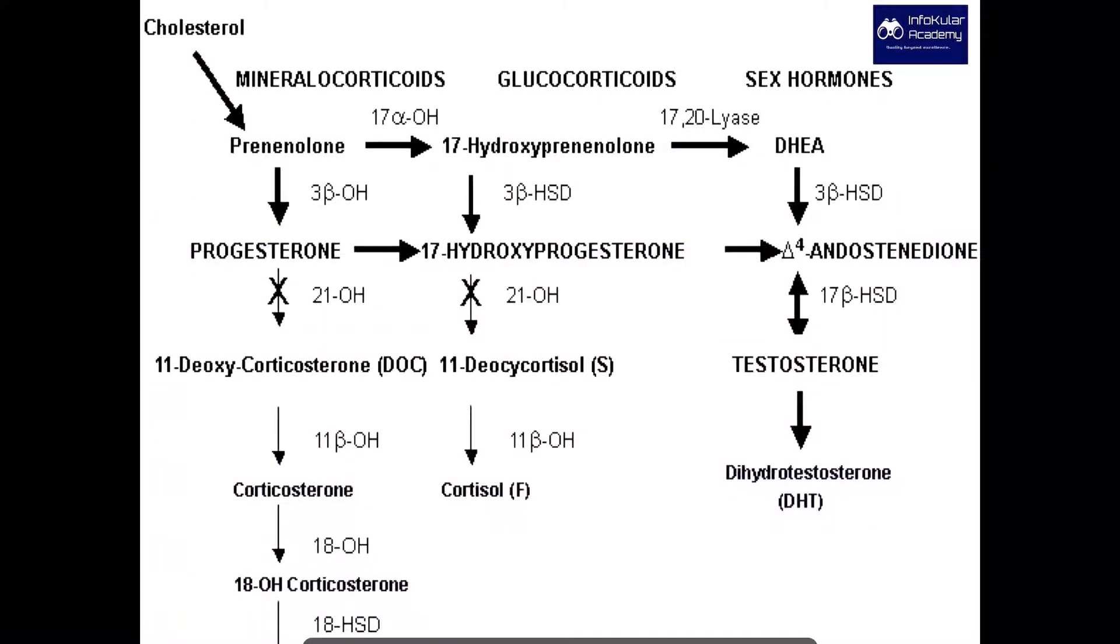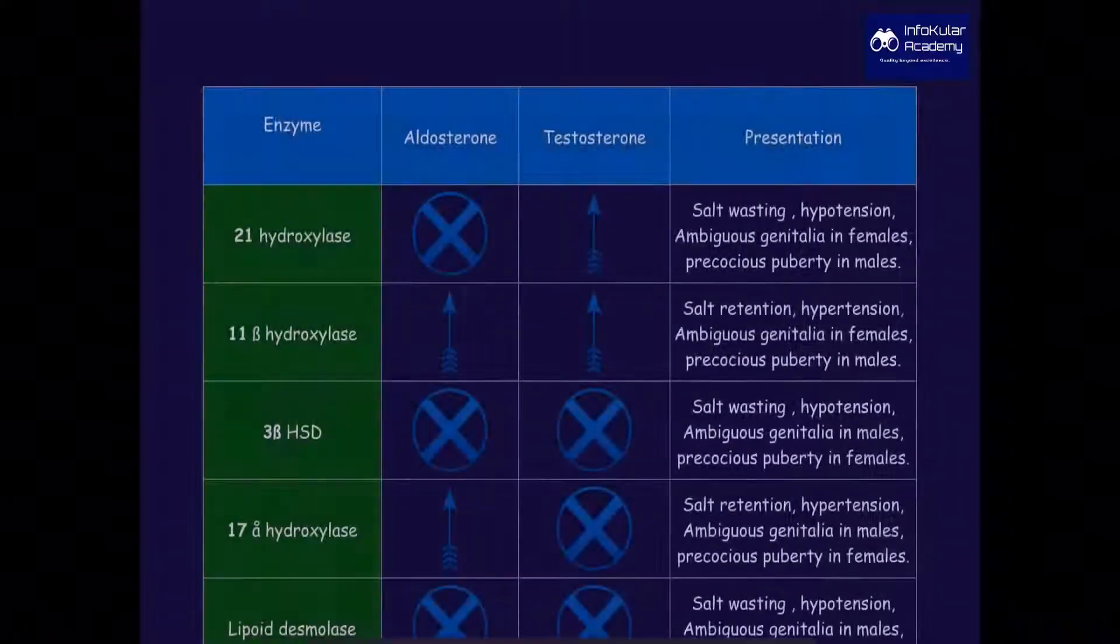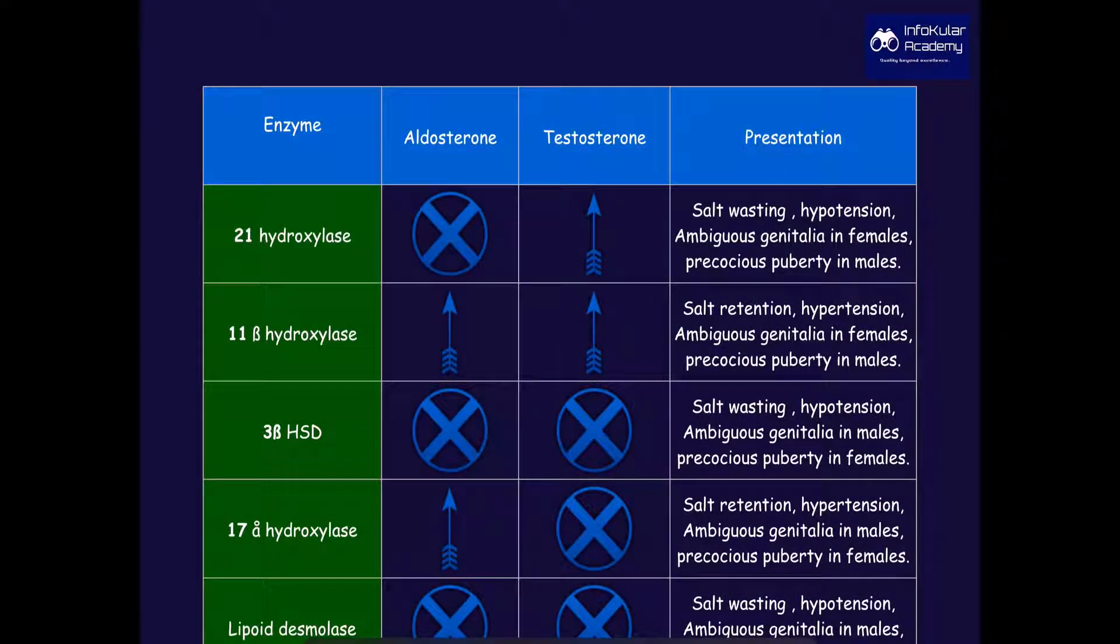This is the general metabolism showing how aldosterone, cortisol, and DHT, which is dihydrotestosterone, is formed through a series of steps and enzymes: 21-hydroxylase, 17-beta HSD, 3-beta HSD, 11-beta hydroxylase, all of these enzymes contributing to the formation of cortisol, DHT, and aldosterone. Any problem in the secretion of these enzymes leads to certain symptoms, and this tabulated form is a very easy way to remember these symptoms.